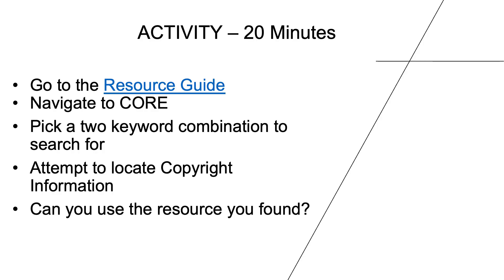For our final exercise, we're going to try more of a freeform approach. I'll help you get there, but what you find is completely up to you. Return to the resource guide and navigate to Core. Pick a two-keyword combination to search for — it can be whatever you want. Then select a resource from your search results and attempt to locate the copyright information in the result and determine how open the resource is. You can pause here and come back for the final part of the video.